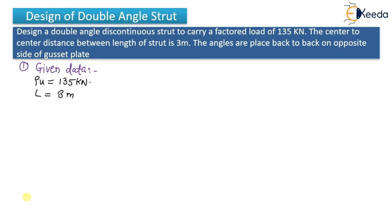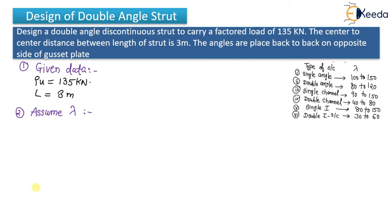The second step is to assume the value of lambda or FCD. For double angle, you can assume lambda in between 80 to 130. So I'll assume lambda = 130. You can open IS code page number 42 and for lambda = 130 and FY = 250, the FCD value is approximately 74.3, so I'll assume FCD ≈ 75 N/mm².